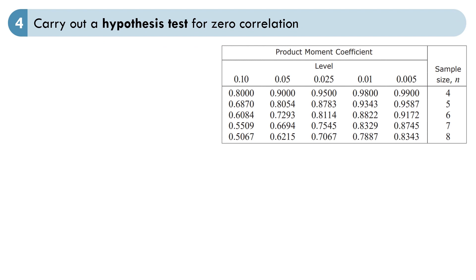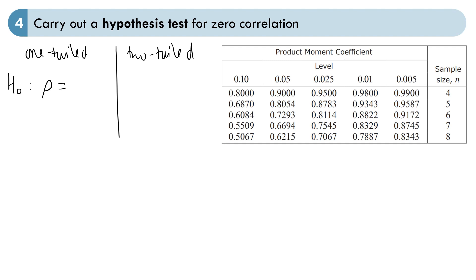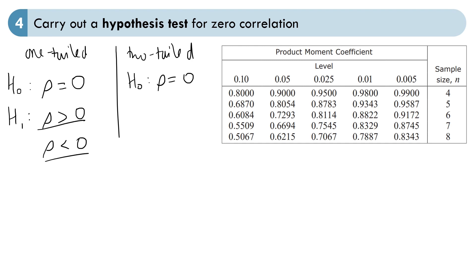You should also be able to carry out hypothesis tests with the PMCC, including one-tailed and two-tailed tests. For a one-tailed test, the null hypothesis is that rho — the population PMCC — equals 0, and the same applies for a two-tailed test. The alternative hypothesis for a one-tailed test is either rho greater than 0 or rho less than 0, depending on whether you're testing for positive or negative correlation. For a two-tailed test, the alternative is that rho is not equal to 0. Remember to halve the significance level for a two-tailed test.